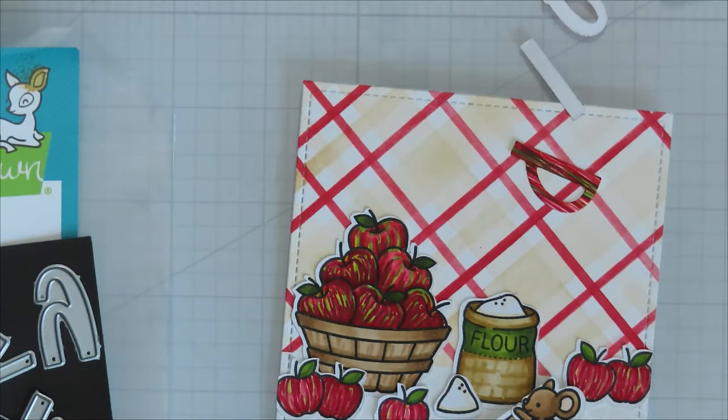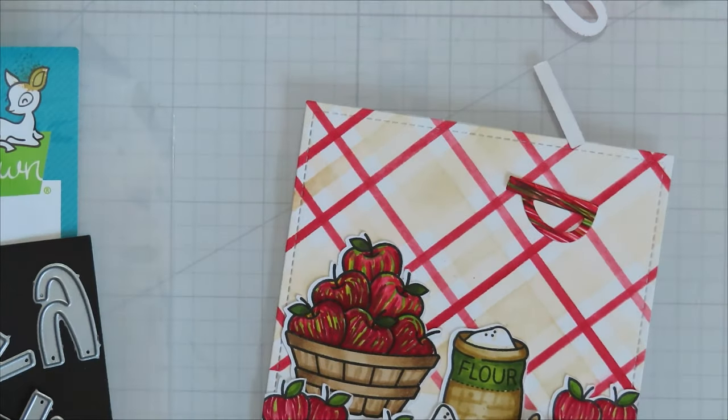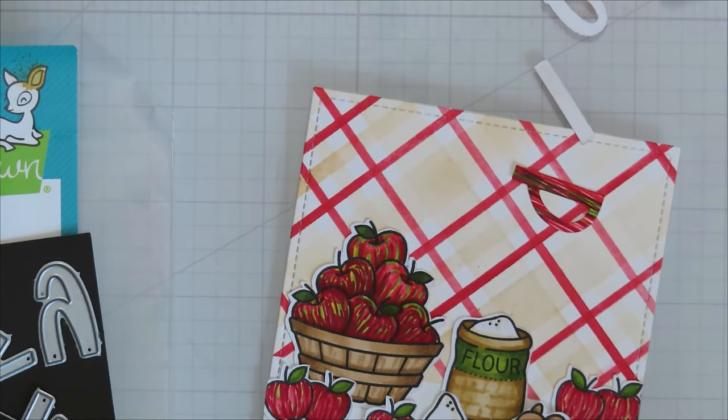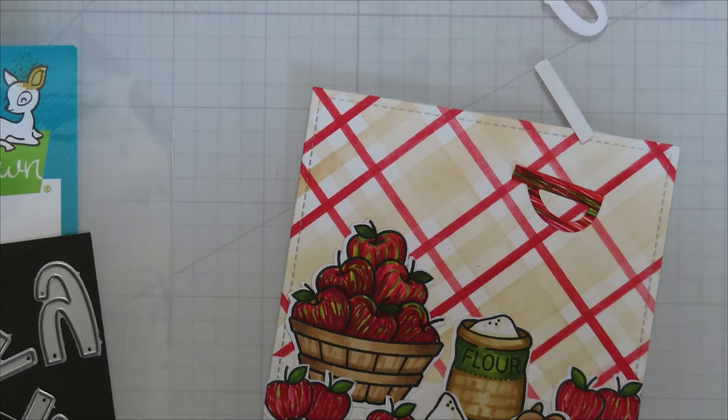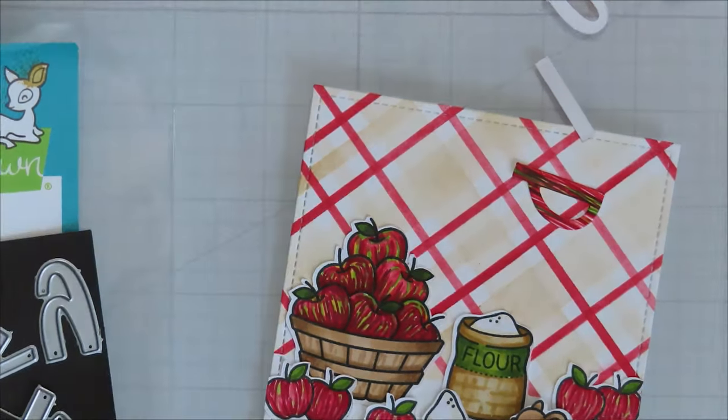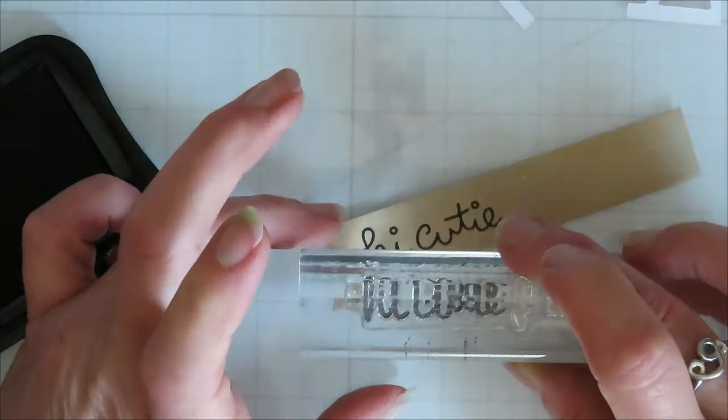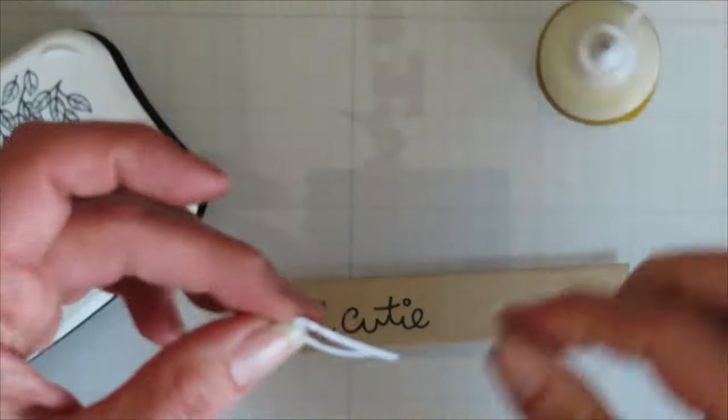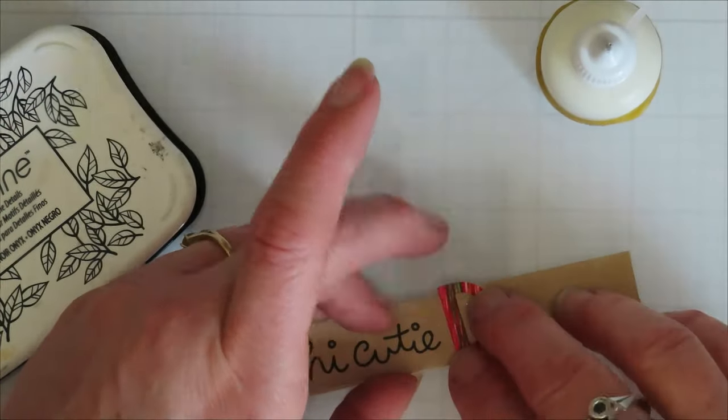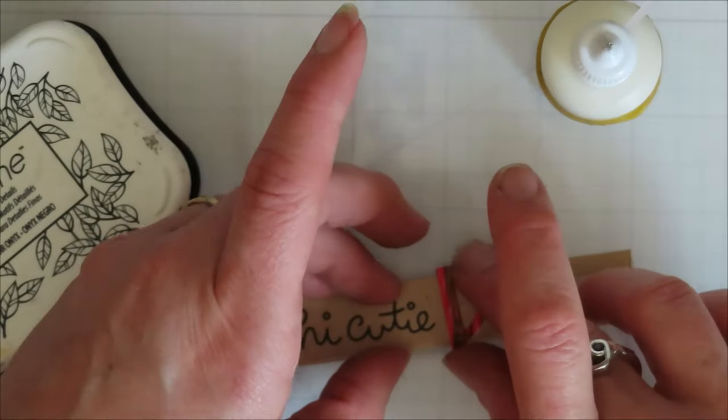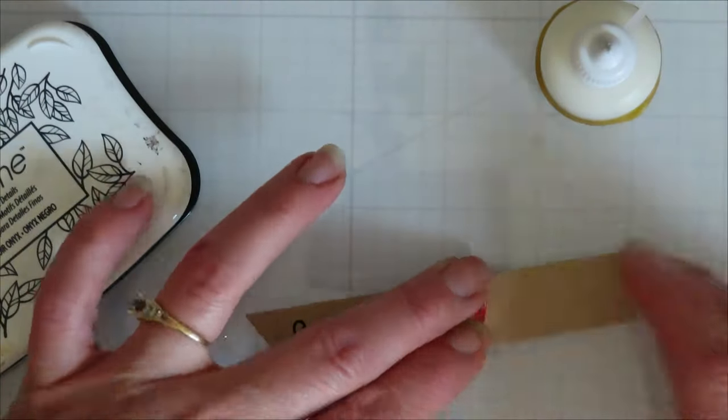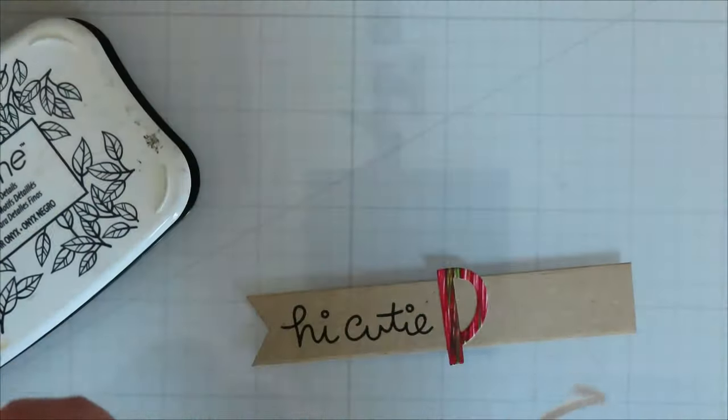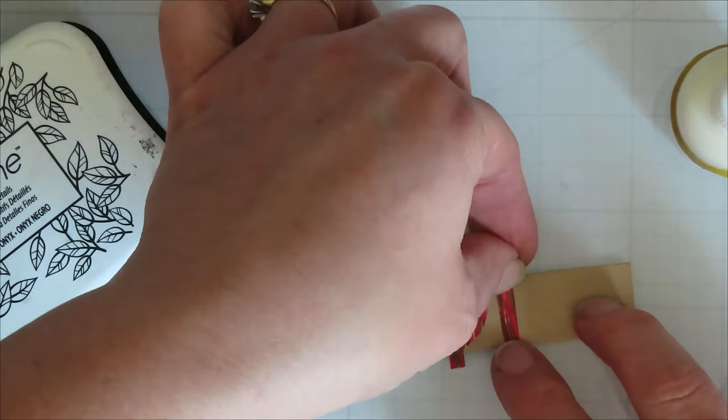I looked at doing it just directly on the background and I felt like my pie was getting lost in the plaid. So I decided to bring in a sentiment banner. I think it's Everyday Banners. I don't remember, but it's one of the bigger ones. It doesn't fit the letters totally on there, but it gives them enough of a backing that I think it pops them off the page a little bit more.